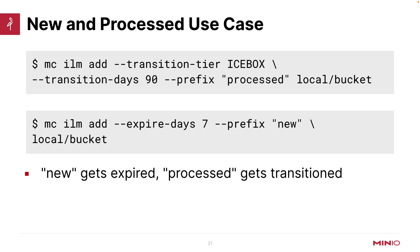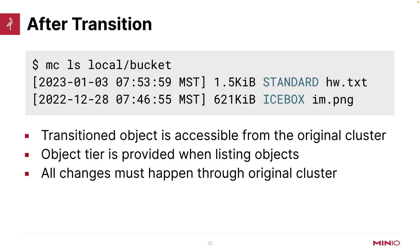Here's the new-and-processed use case: I set up MC ILM add with transition tier icebox, transition days 90, and prefix 'processed' on the local bucket. Then for the local bucket I set up MC ILM add with expire days seven and prefix 'new.' You might wonder — I'm expiring after seven days but transitioning after 90. The answer is that the prefixes are different: 'new' gets expired, 'processed' gets transitioned. After I transition an object, it is still accessible from the original cluster.